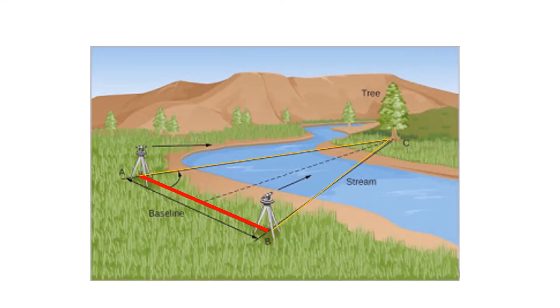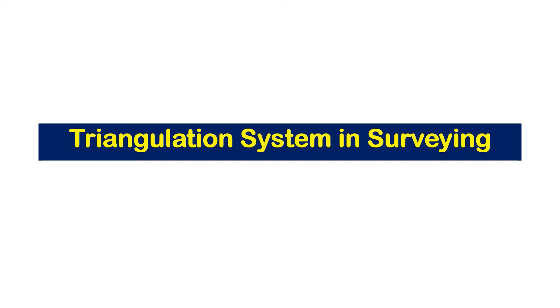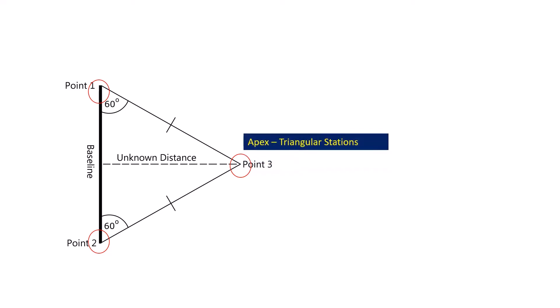Triangulation system in surveying: As mentioned, a series of interconnected triangles form the survey area. If we know the length of one side and the three angles, the length of other sides of each triangle can be computed. In this system, the apex of the triangles are called triangulation stations, and the whole figure is called a triangulation system or triangulation figure.